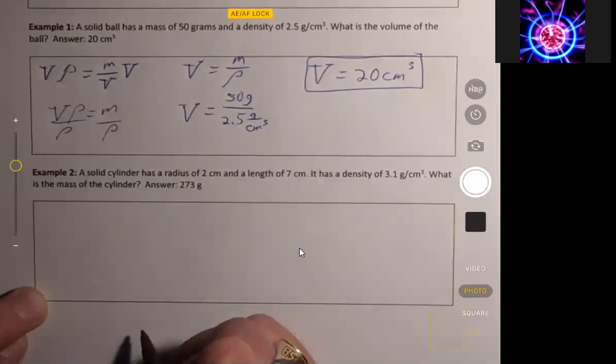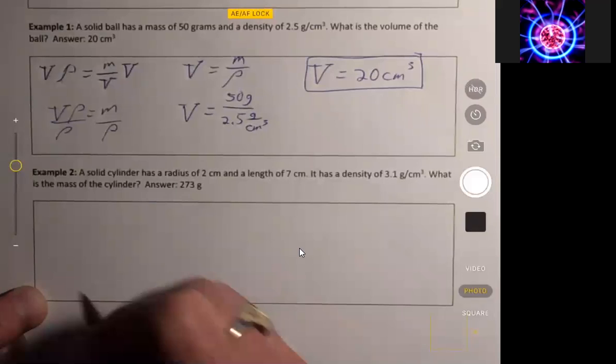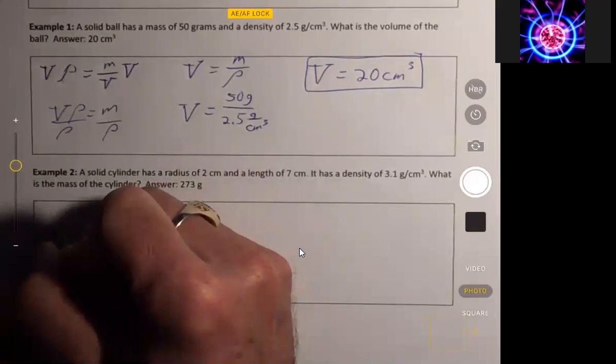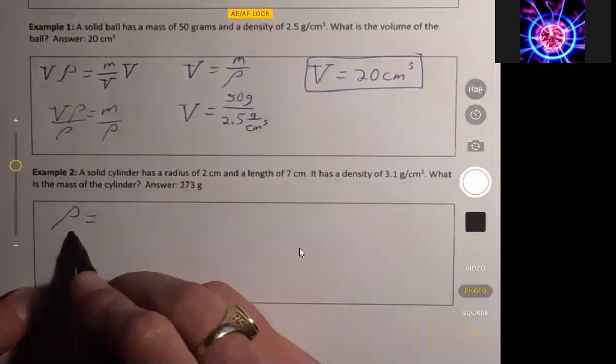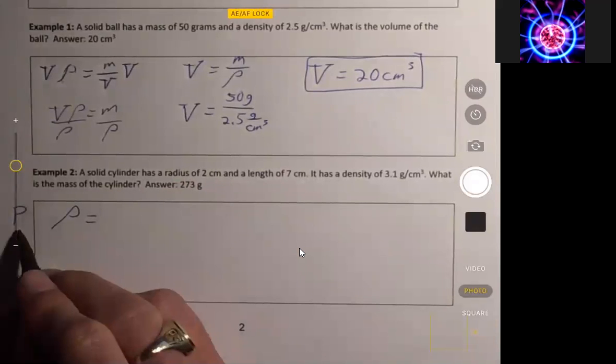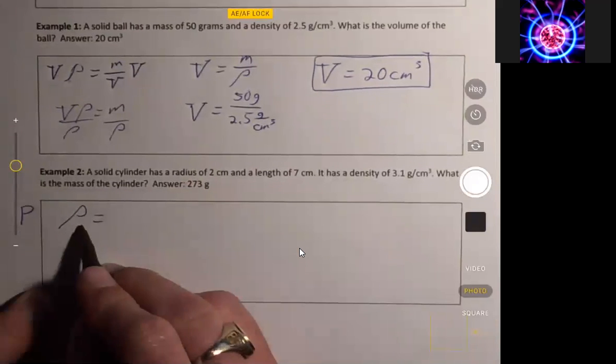All right, example two. We have the same relationship, density, which is the Greek letter rho, which I'm not particularly good at drawing, but I just make sure they don't look like a P. Okay, so there's a P and there's a rho. I just make it a leaning over P.